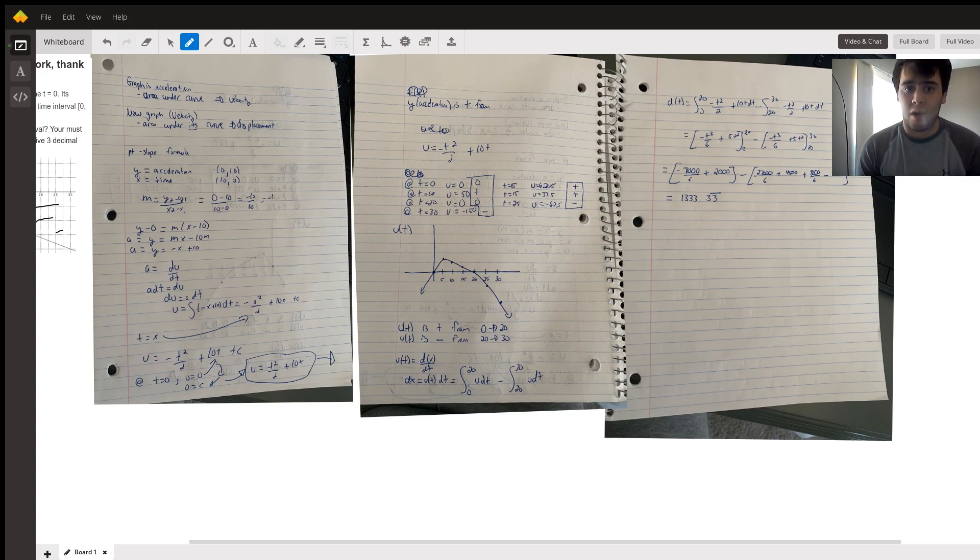So in order to get the velocity equation we have to integrate the acceleration equation, and it's indefinite. When we integrate the acceleration equation we get negative x squared over 2 plus 10x plus c. Now we have initial conditions for the velocity that says that the velocity is 0 at time equals 0 stated in the problem. So if we plug in 0 for v and 0 for t, we get that c equals 0. Therefore our new equation for velocity is negative t squared over 2 plus 10t.